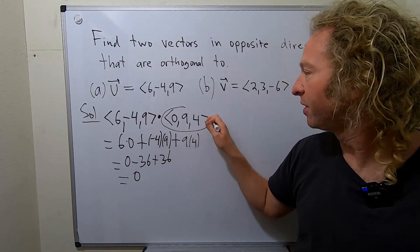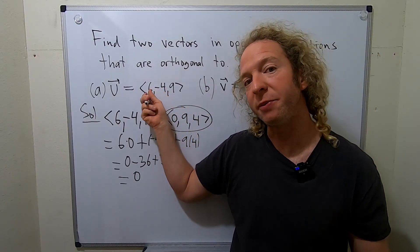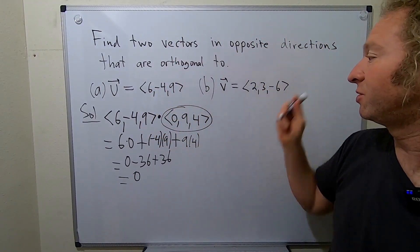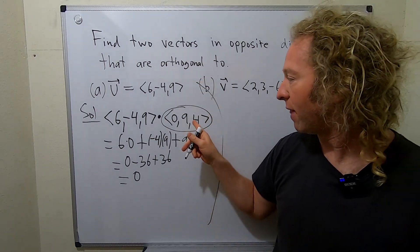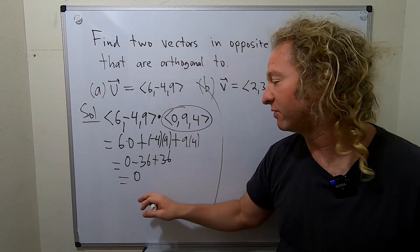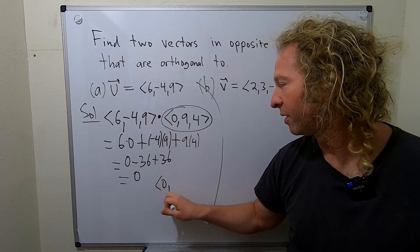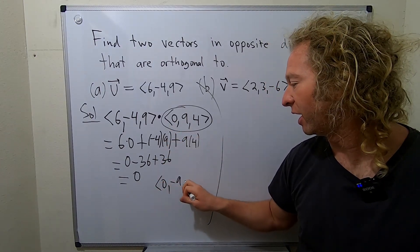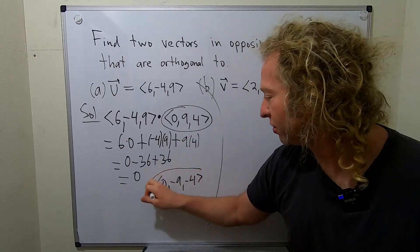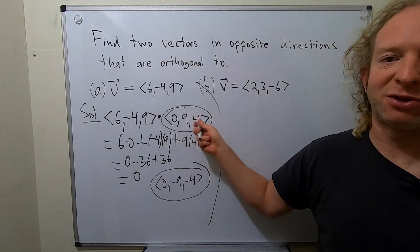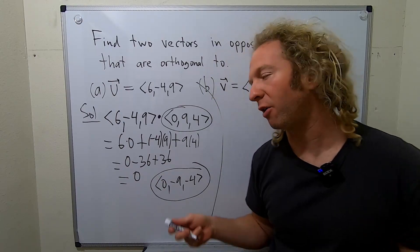So they're orthogonal. So this is a vector that is orthogonal to this one. Now it said find two vectors in opposite directions. So that's one answer. The other answer you just put a negative sign in front of it. So it'd be negative 0 which is just 0, negative 9, negative 4. So this is in the opposite direction of this one. And they should both be orthogonal. You could check.